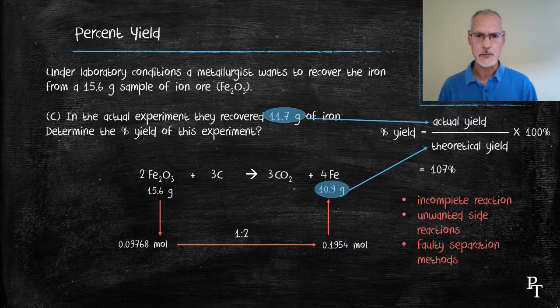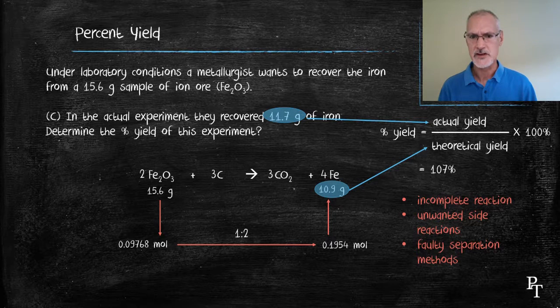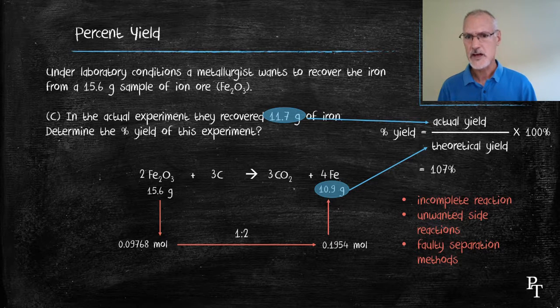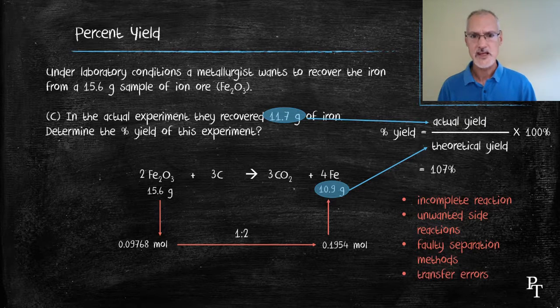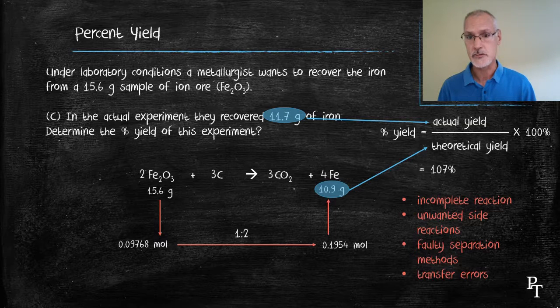There could be faulty separation methods, but that's not so much of an issue in this case, because carbon dioxide is a gas and would easily leave the iron behind. But if your method perhaps had filtration in it, that could lead to some faulty separation. Perhaps there were transfer errors. Moving liquids in particular from one beaker to another can leave residues behind that will throw off your final answer. But in my particular case, because I got greater than 107%, it should make me question the purity of the stuff that I obtained at the end. So in this case, I would probably say that it was caused by a combination of my first two errors.